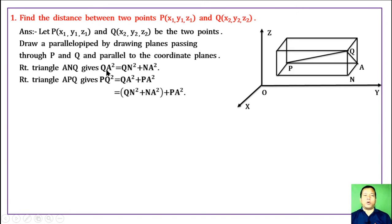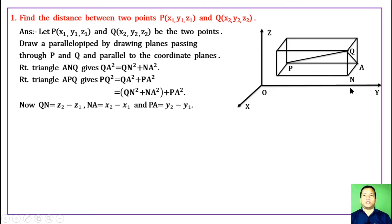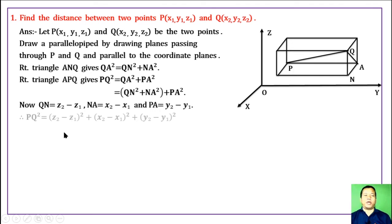Since QA² = QN² + NA², we substitute: QN is the difference (z2 − z1), NA is the difference (x2 − x1), and PA is the difference (y2 − y1). Putting these values into the above expression: